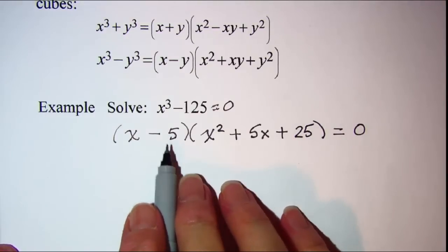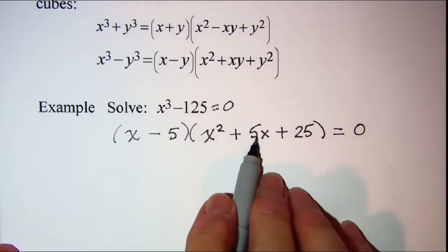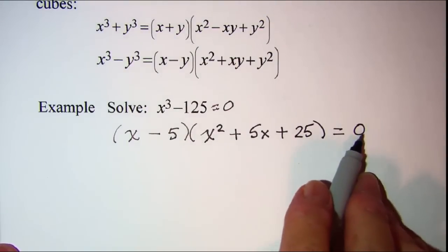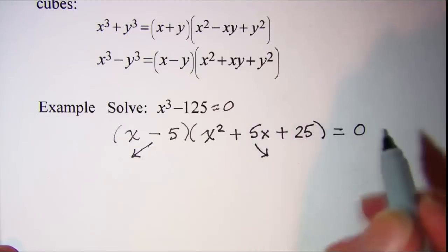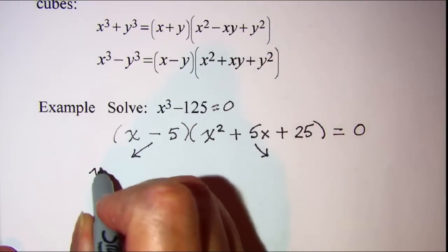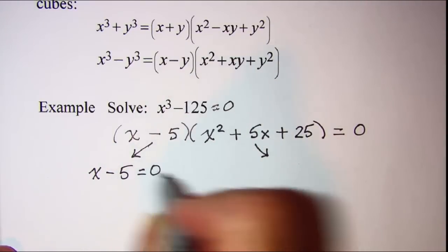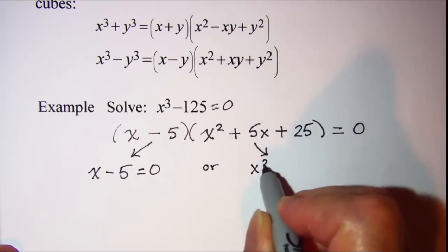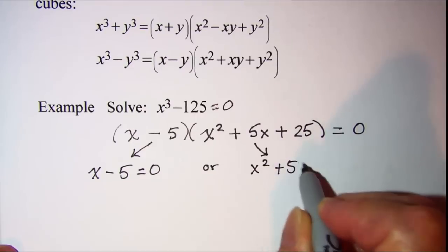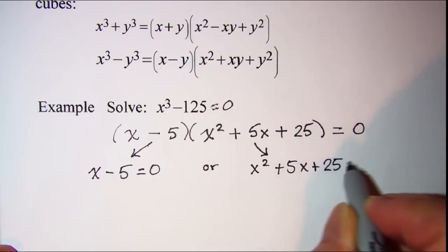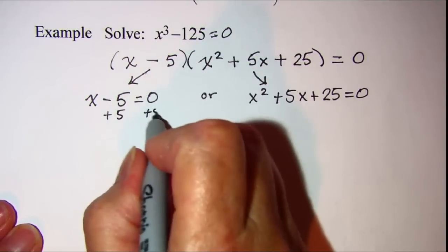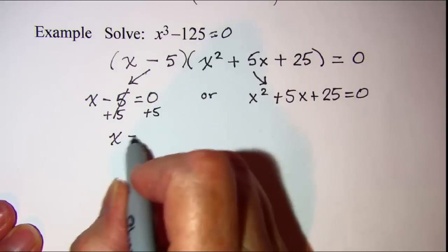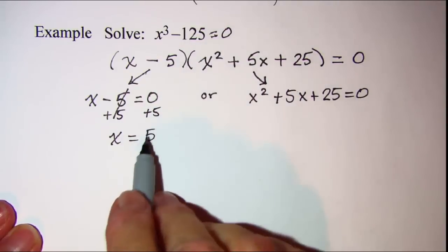The zero factor property says that if two factors multiplied together equal zero, then one or the other equals zero. So we set each factor equal to zero and solve. From the binomial we add 5 to both sides and get x equals 5, which is the solution we found earlier.